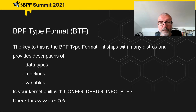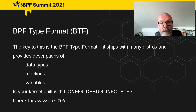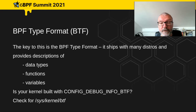The key to all this is the BPF Type Format (BTF), which ships with many distros now and provides descriptions of data types, functions, and variables. You can check if your kernel is built with BTF by looking for /sys/kernel/btf — there should be a vmlinux file there with the BTF associated with the kernel, and module-specific ones if you've got module BTF too.